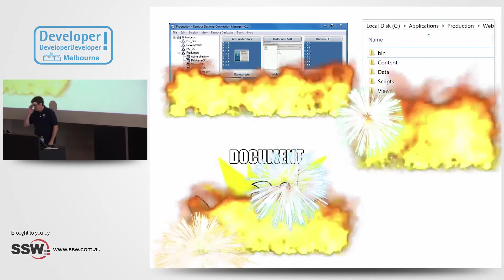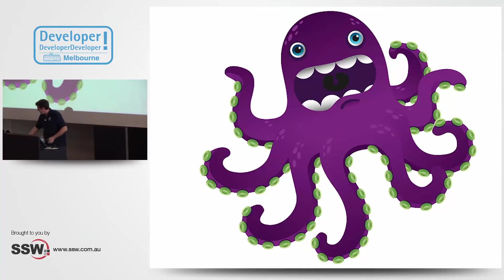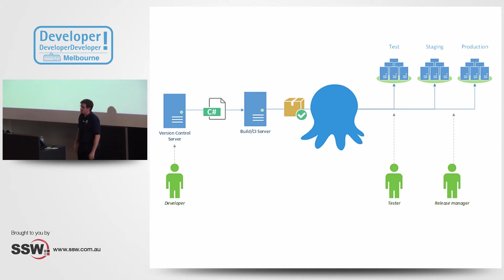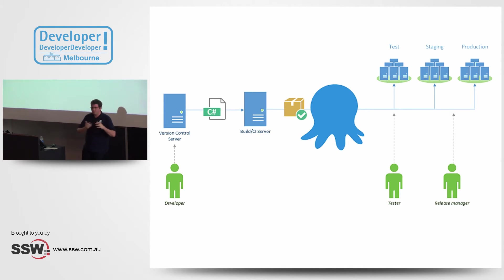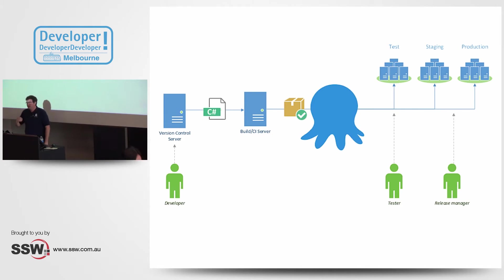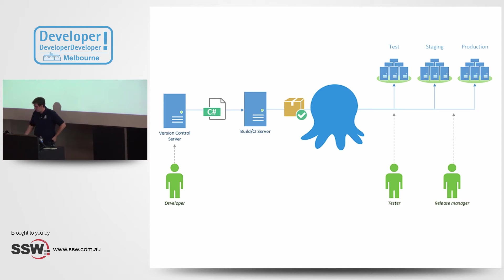So Octopus sets out to solve these problems. We solve it by hooking into your build pipeline — you already have source control, you already have a build server. Your build server is very good at compiling code and running tests, but it's not so good at putting the built stuff into production or pre-production environments. That's where Octopus comes in. As part of your build process you compile, run the tests, and then take the application — the web app or Windows service — and package it up to deploy with Octopus.